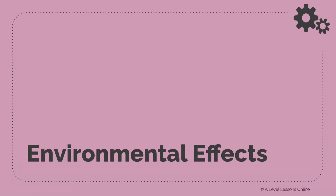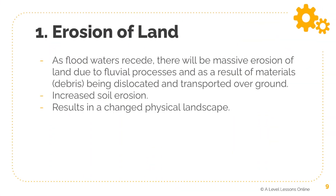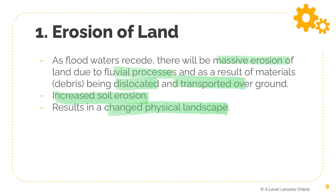Moving on to the environmental impacts of floods. First, there is erosion of land. As floodwaters recede, there will be massive erosion due to fluvial processes — the floodwater erodes, transports, and deposits sediments picked up along the way. This leads to increased soil erosion and a change in the physical landscape. Post-flood, many different landscapes are heavily affected and look torn apart, which is a direct result of flooding.